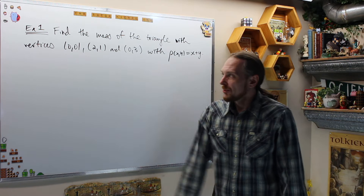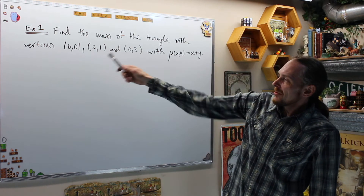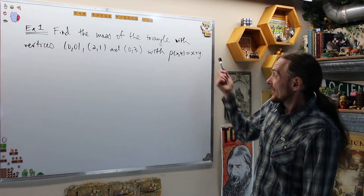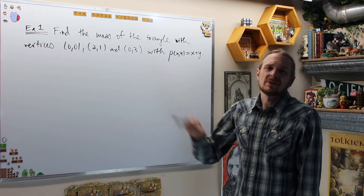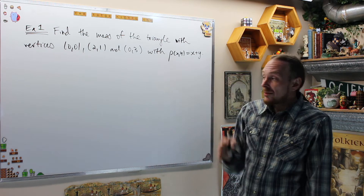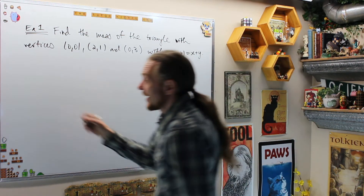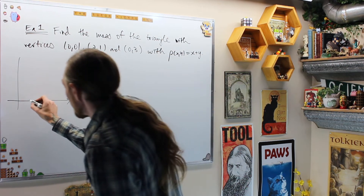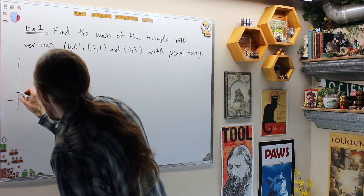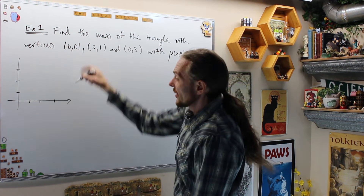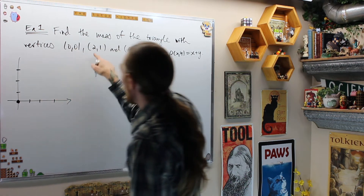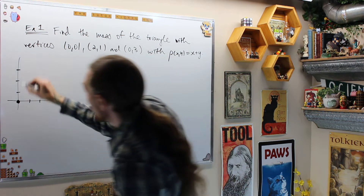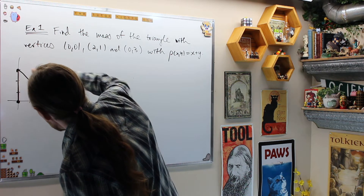Example 1: Let's find the mass of the triangle with vertices (0,0), (2,1), and (0,3) if we have a density of x+y across that triangle. First of all, let's draw and find the bounds of our region. We have the points (0,0), (2,1), and (0,3) — so this is our triangle.